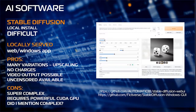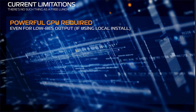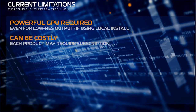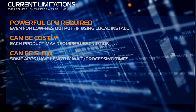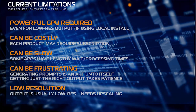Current limitations: a powerful GPU is required for local install, even for small, low-resolution images. It can be costly — each product may require a subscription. It can be slow — some apps have lengthy wait and processing times. If you install on your own computer with a low-end video card, your GPU provides speed while VRAM controls image size; with only 4 to 8 gigs of VRAM, you'll only produce 512x512 images. Generating just the right prompt is an art unto itself, and getting the right output will take patience. Most output is low-resolution and will need upscaling, though this will obviously get better as time progresses.